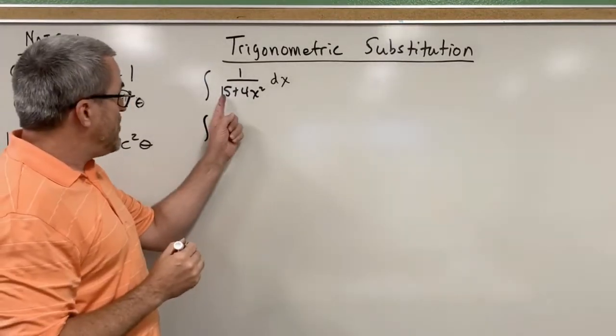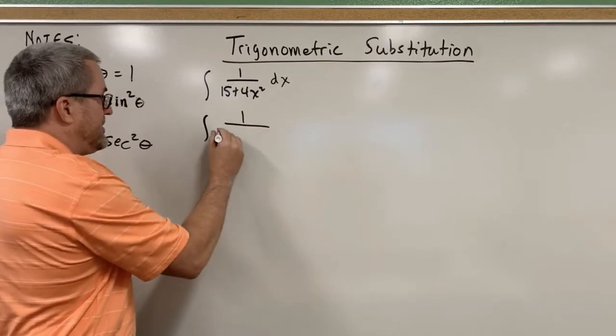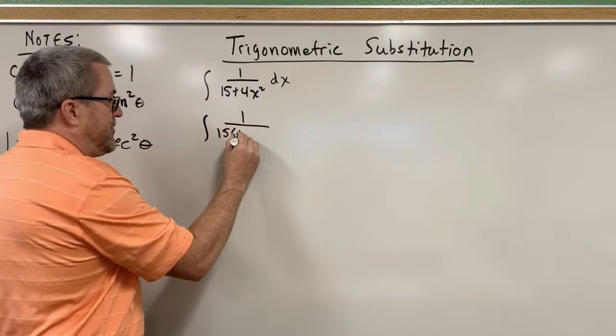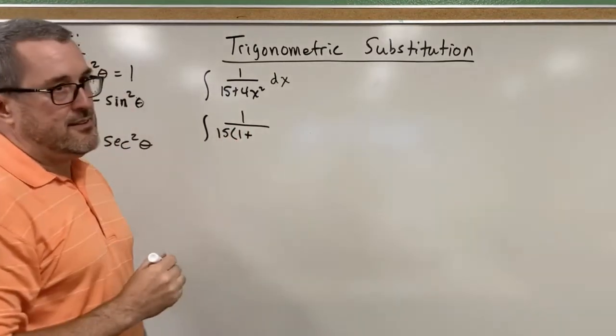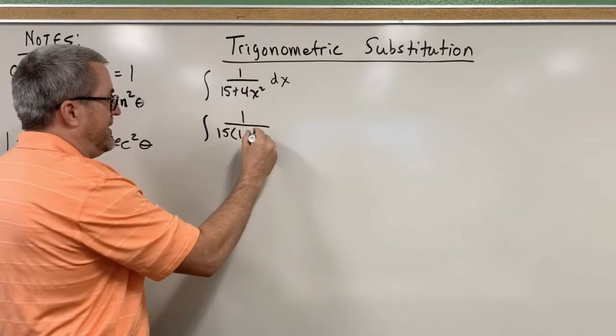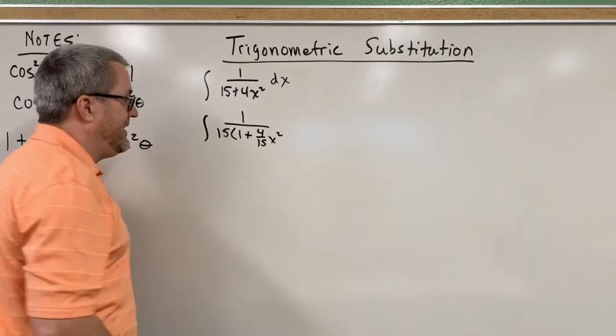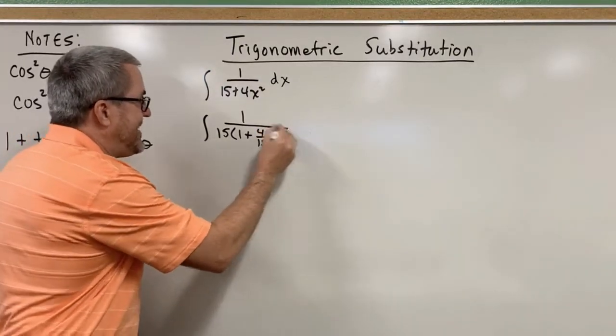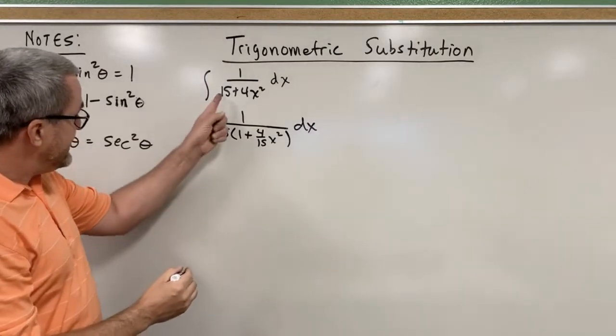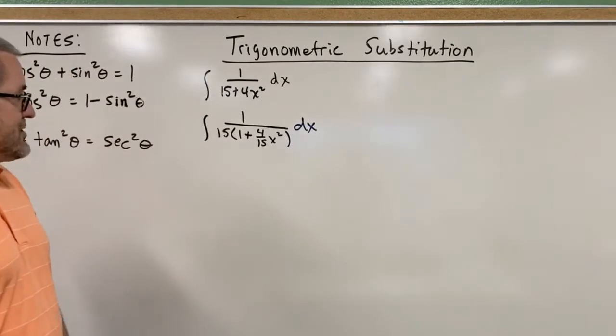The first thing is we want it to say one plus, and so let's make a move. Let's factor out the 15. If we factor out the 15, we'll be left with one plus, 15 times what would give you 4x squared? Well, 4 fifteenths x squared. So I hope you see that in factoring out the 15, 15 times 1 is 15, and 15 times 4 fifteenths is just the 4x squared.